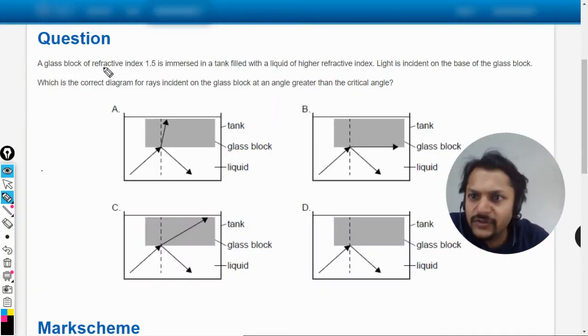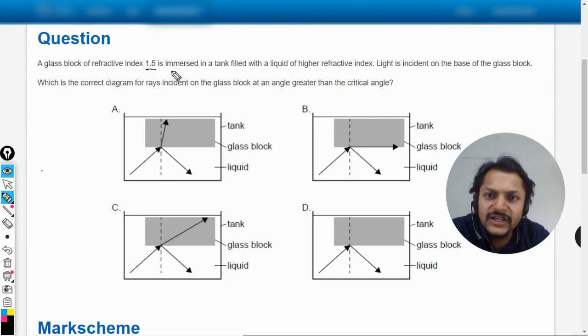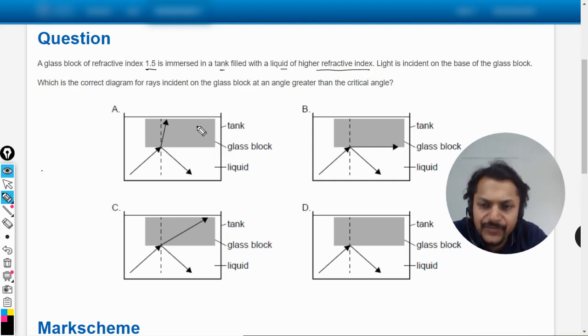Okay dear students, let's see what is there in this question. A glass block of refractive index 1.5 is immersed in a tank filled with the liquid of higher refractive index. So this is the glass slab and the refractive index is 1.5, and we can imagine it to be two of higher refractive index.